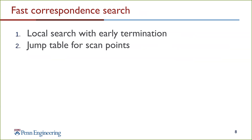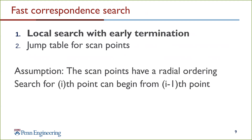In order to achieve a fast correspondence search, two features are incorporated into the algorithm. The first is a local search with an early termination criteria, and the second is a data structure called the jump table for scan points. We'll first cover the local search with early termination criteria.